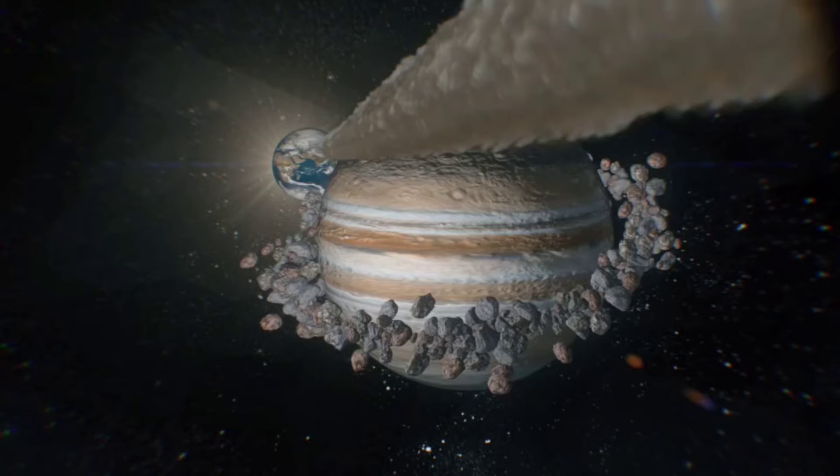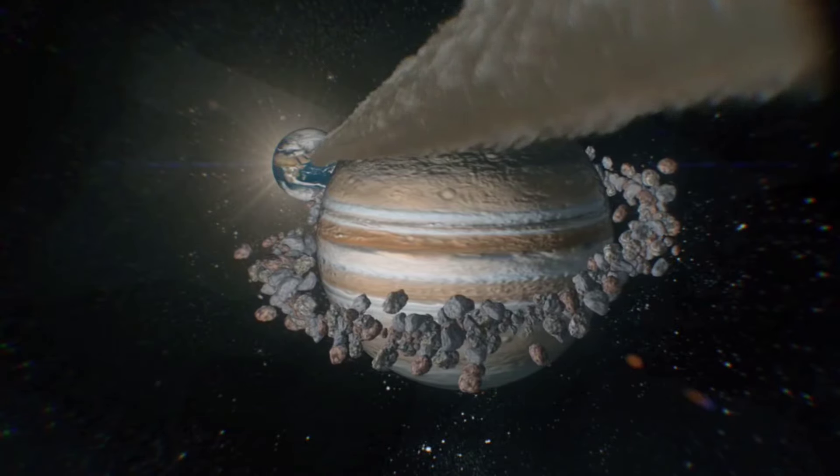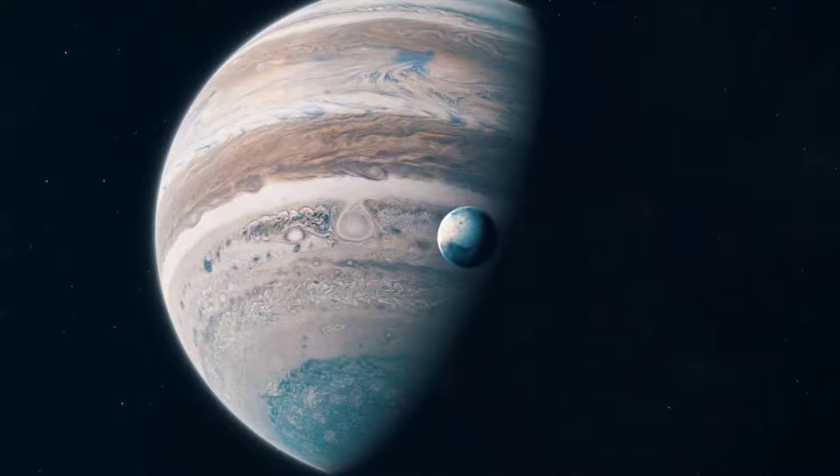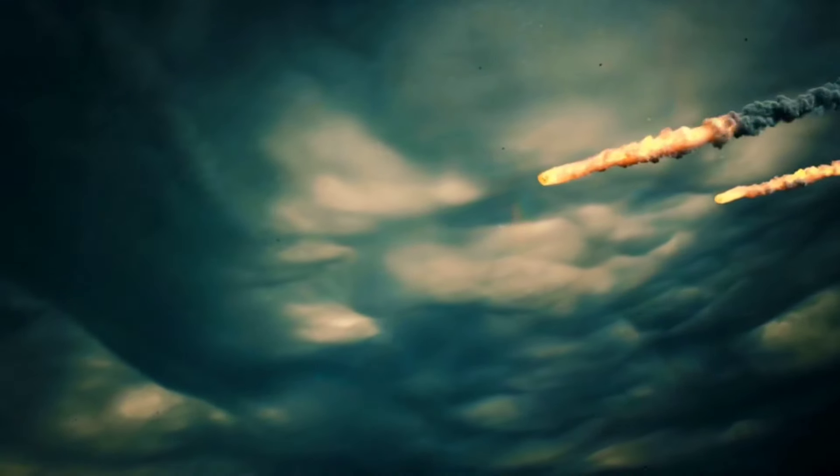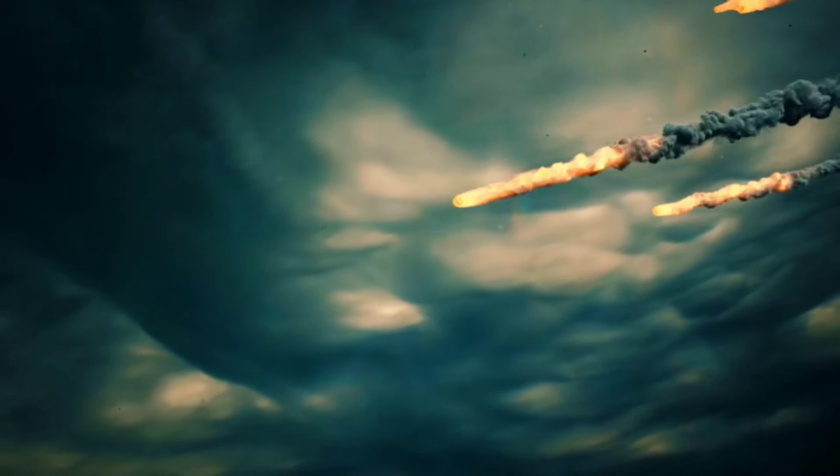Despite its protective role, Jupiter has, on occasion, made errors and overlooked potential threats, evident in its redirection of a comet towards Earth 350 years ago.